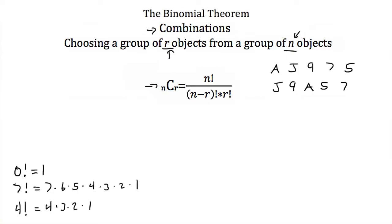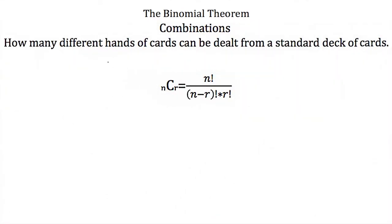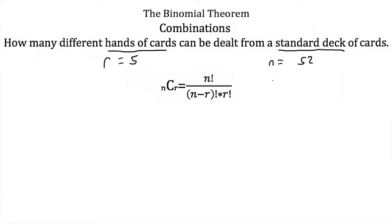Now let's try an example of finding combinations. Let's find how many different hands of cards can be dealt from a standard deck of 52 cards, where our hand is five cards. So we want to know how many different combinations of five cards we can get out of 52. That means n is 52 and r is five, so we'll plug 52 for n and five for r into the equation.